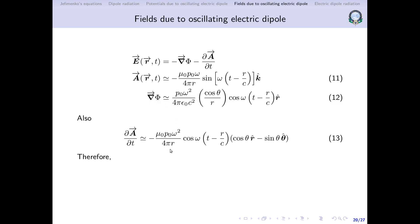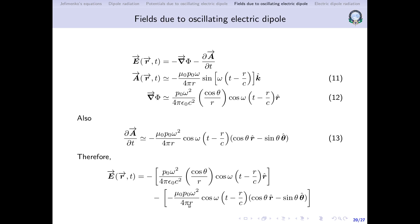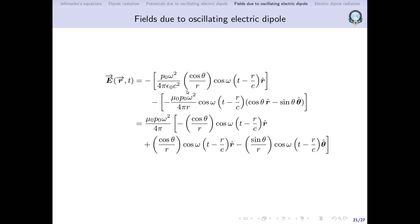Now substituting gradient of φ and ∂A/∂t into E = −∇φ − ∂A/∂t and combining with minus signs. Taking common constants outside: noting that 1/(ε₀c²) = μ₀ since c² = 1/(μ₀ε₀), we factor out μ₀p₀ω² / (4π). The remaining terms include cos θ / r and sin θ / r components.